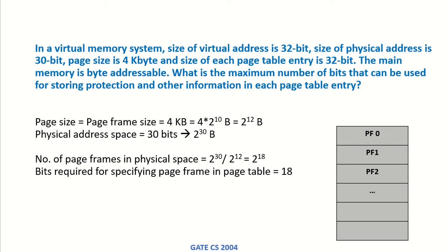In a virtual memory system, the size of the virtual address is 32 bits, the size of the physical address is 30 bits, page size is 4 kilobytes, and the size of each page table entry is 32 bits. The main memory is byte addressable, meaning each byte has an address. What is the maximum number of bits that can be used for storing protection and other information in each page table entry?